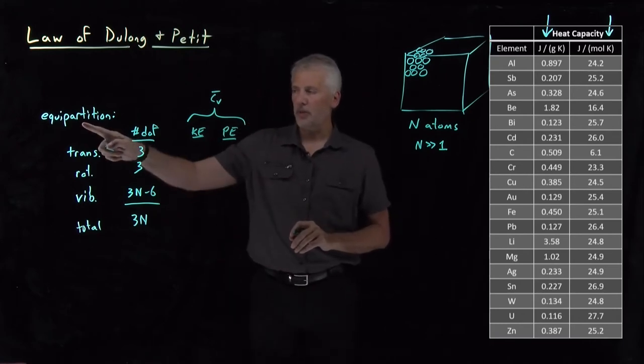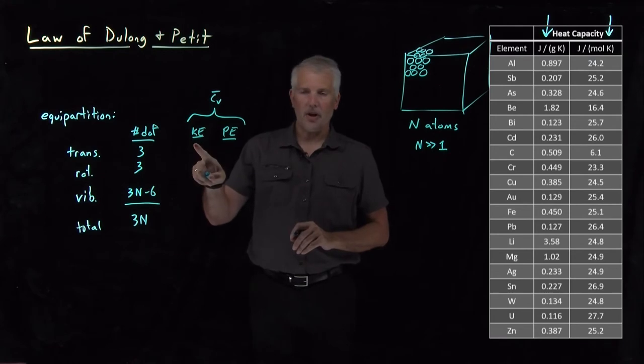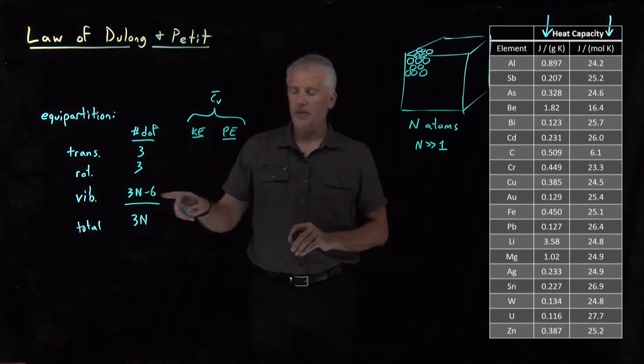Remember, the equipartition theorem just tells us that's one half R for each one of these degrees of freedom that is quadratic, that contributes quadratically to the energy.